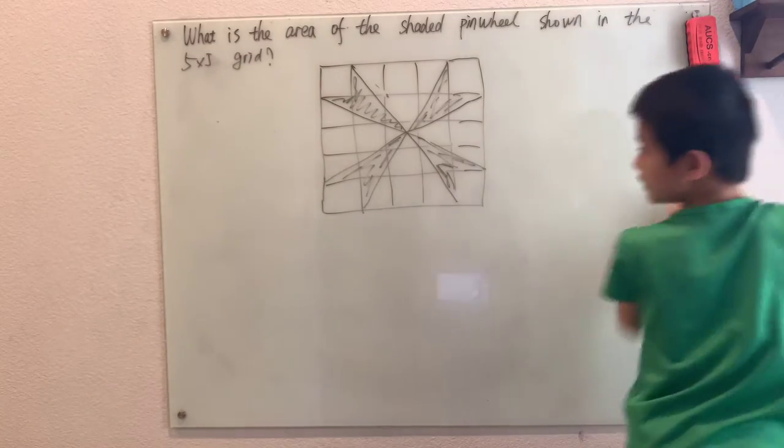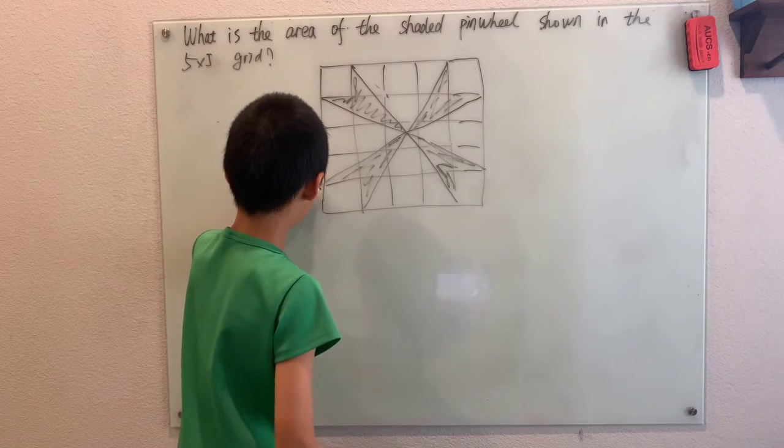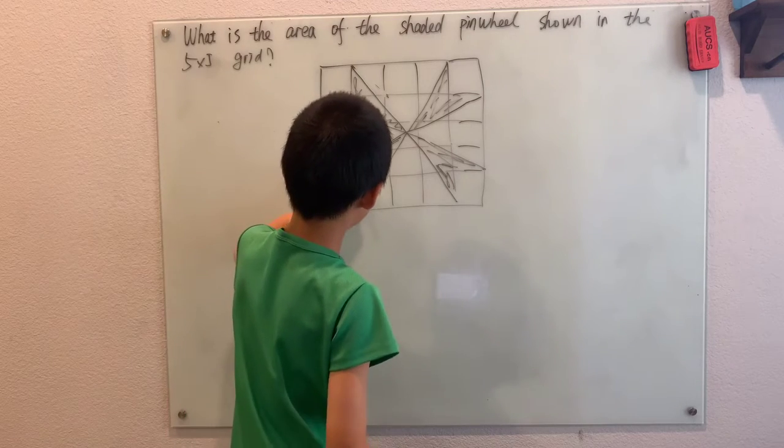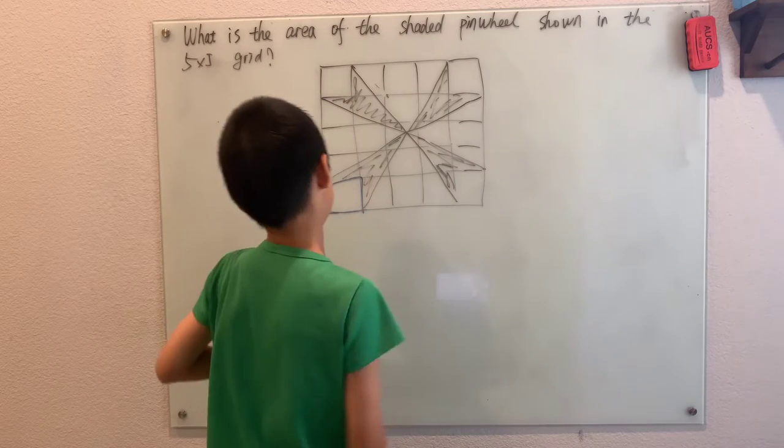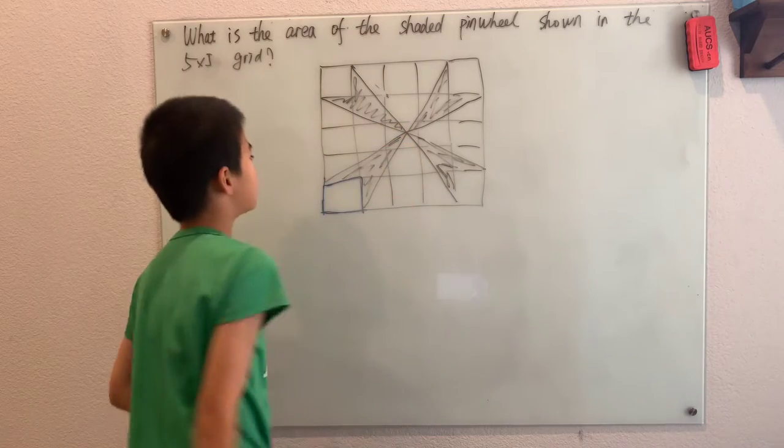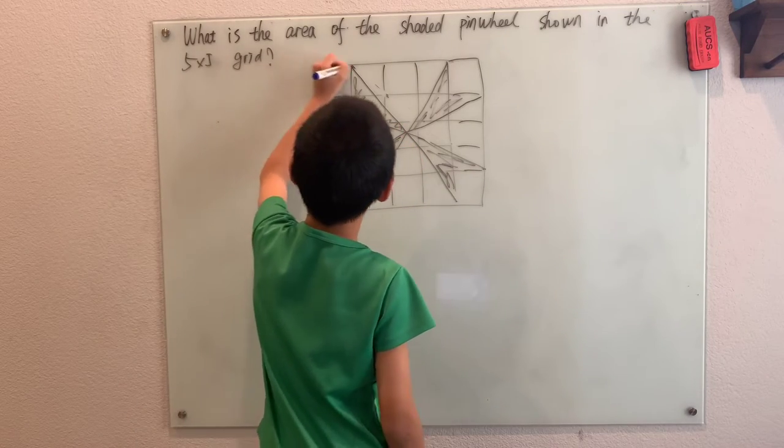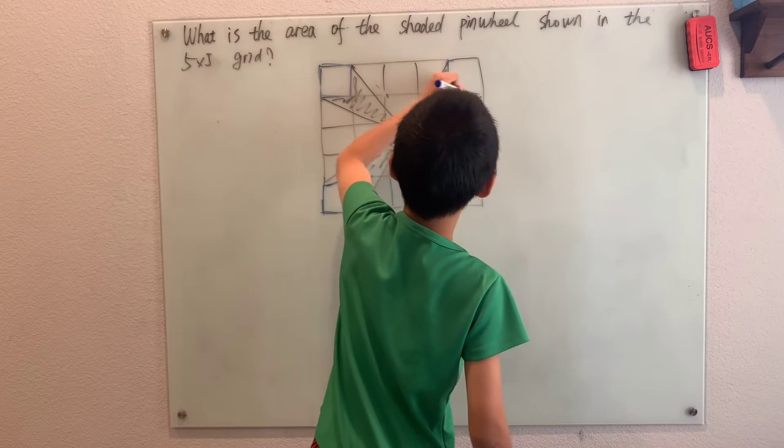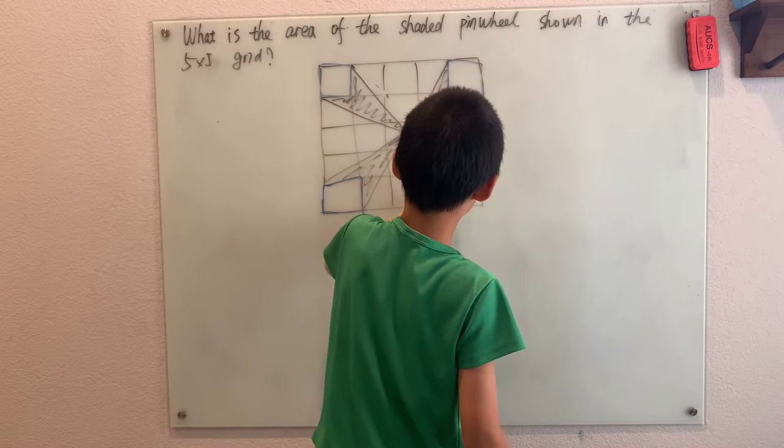So first, we have these 1x1 squares at the end of each of these, I'll say, kind of hands. Well, that's pretty easy to calculate, right? These squares.